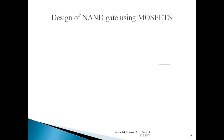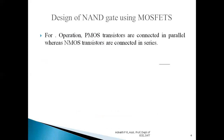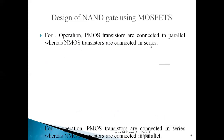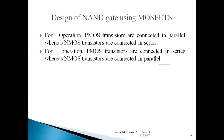To design a NAND gate using MOSFETs, we first consider its Boolean expression. For a dot (AND) operation in CMOS technology, PMOS transistors are always connected in parallel whereas NMOS transistors are always connected in series. For a plus (OR) operation, PMOS transistors are always connected in series whereas NMOS transistors are always connected in parallel.